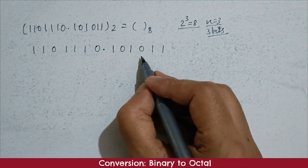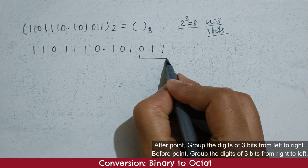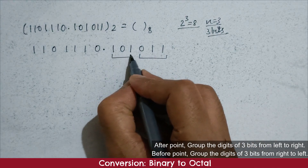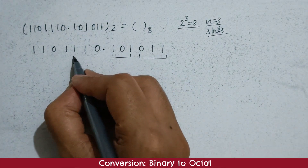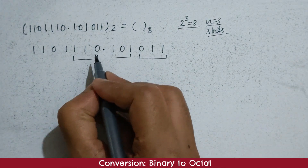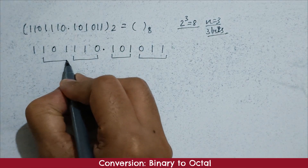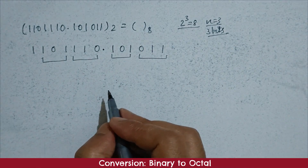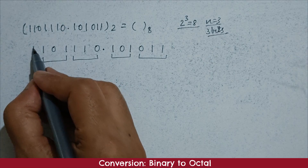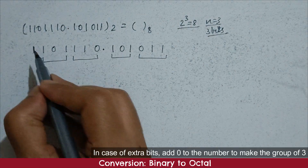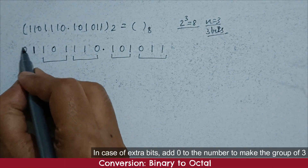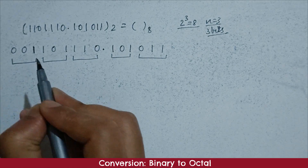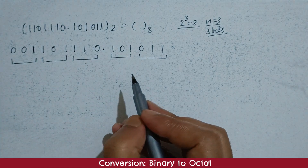After the point, group the number into 3 bits starting left to right. Here in the integral part, just before the point, group the number into 3 bits starting from right to left. If 1 bit remains extra, to make it a group of 3 bits, we will add 2 zeros before the number. Adding zeros before the integer part will not change the value of the integer.